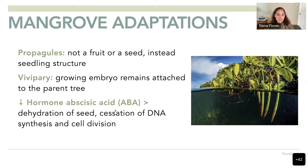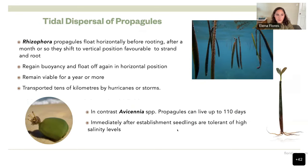This occurs because they have low levels of the hormone abscisic acid, known as ABA. This hormone normally prevents dehydration of the seed by stopping DNA synthesis and cell division. By having low levels of ABA, the mangrove seedling keeps growing until it is detached from the parent tree.